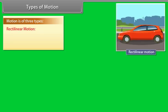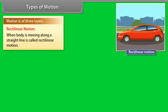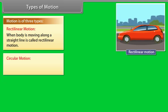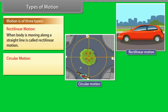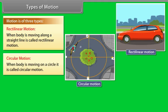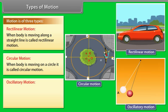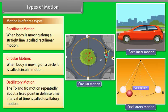Types of motion: Motion is of three types. (1) Rectilinear motion: when a body moves along a straight line, it is called rectilinear motion. (2) Circular motion: when a body moves on a circle, it is called circular motion. (3) Oscillatory motion: the to-and-fro motion repeated about a fixed point in a definite time interval is called oscillatory motion.